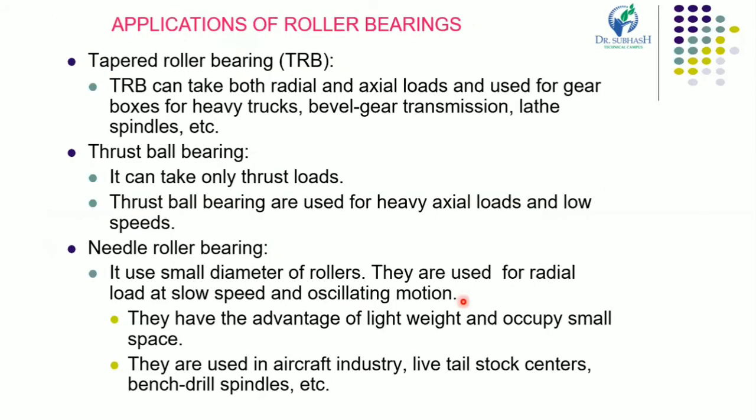Now, different applications of roller bearings. Taper roller bearing can take both radial and axial loads and is used for gearboxes for heavy trucks, heavy gear transmission, and lathe spindles. Thrust ball bearing can take only thrust load and is used for heavy axial loads at low speeds, such as in worm gearboxes and crane hooks. Needle roller bearing uses small diameter rollers and is used for radial loads at slow speed and oscillating motion.